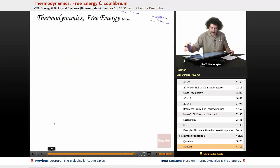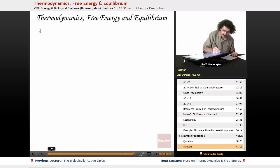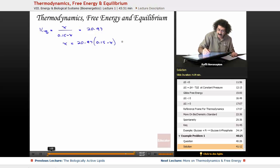I have Keq equals X over 0.15 minus X, products over reactants at equilibrium. This happens to equal 20.97. I know what the equilibrium constant is.